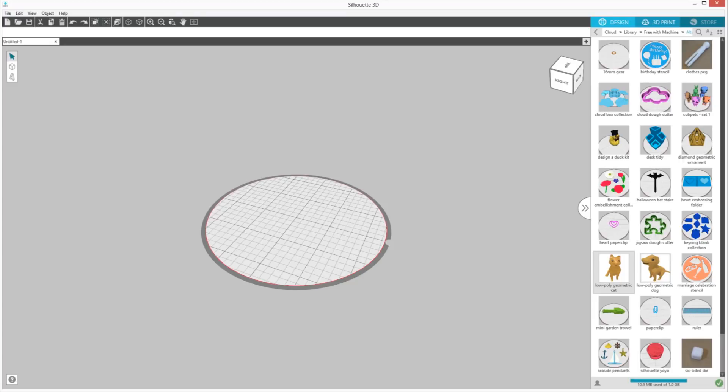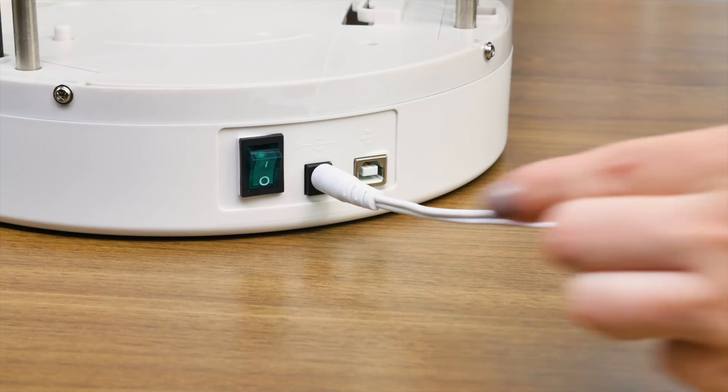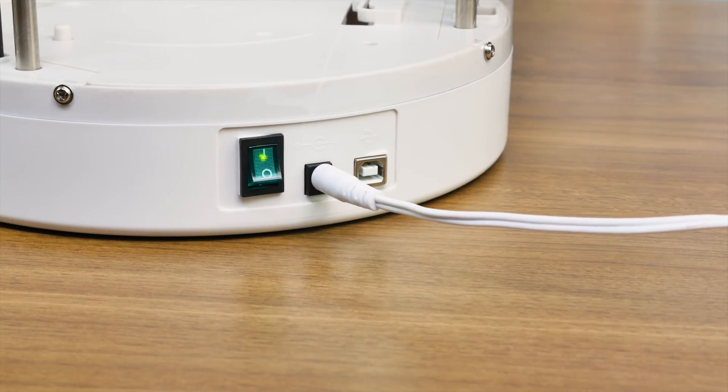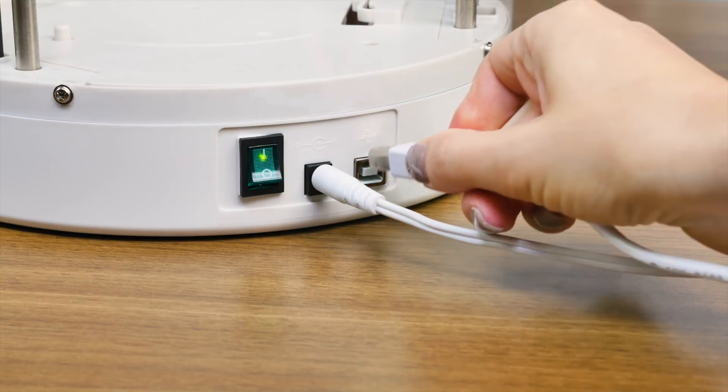To load the filament in your Alta 3D printer, start by opening Silhouette 3D, power on your Alta, and connect it to your computer.